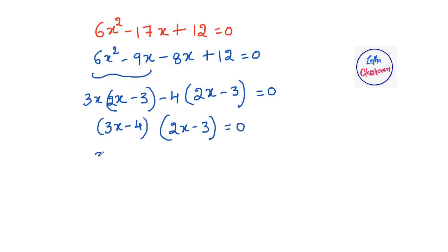Now, 3x - 4 = 0. So 3x = 4. Therefore, x = 4/3.